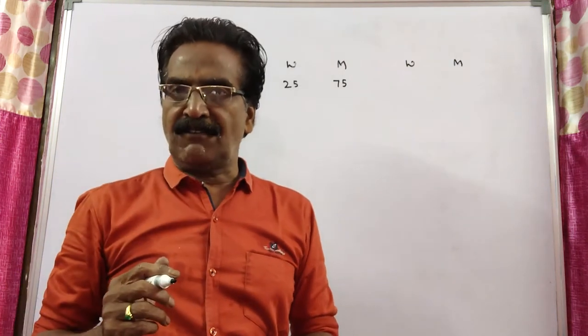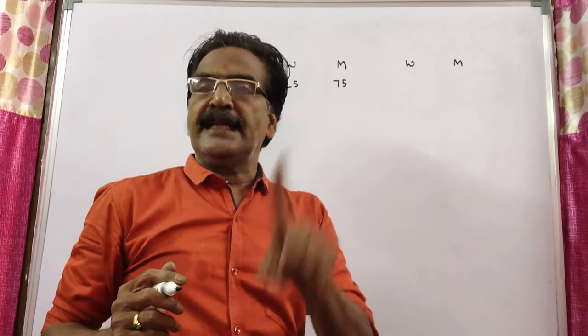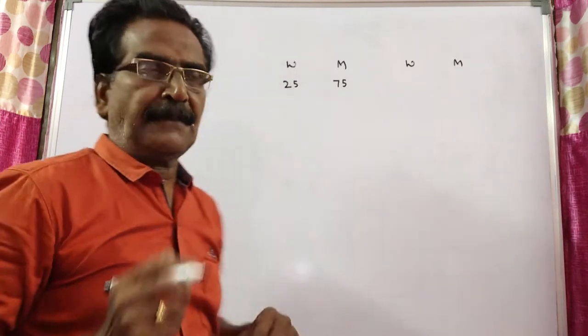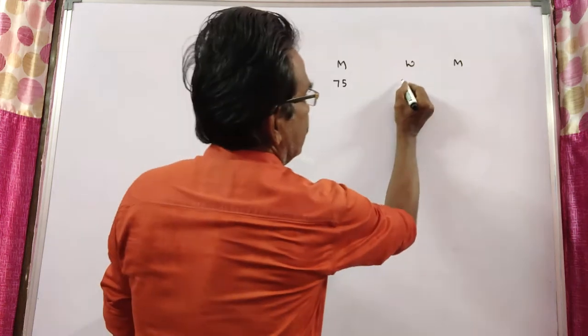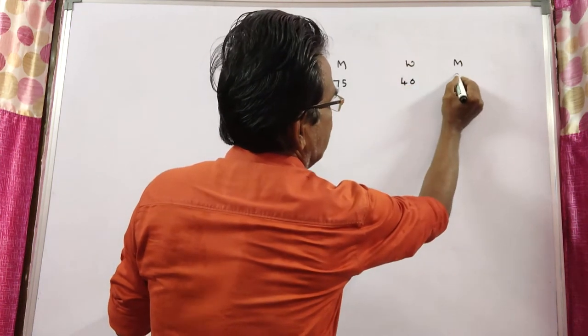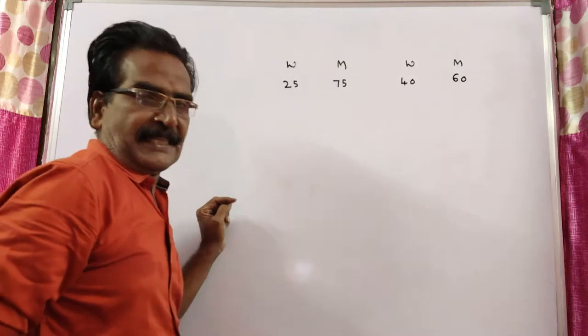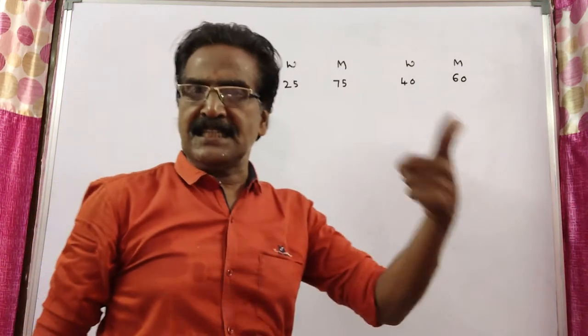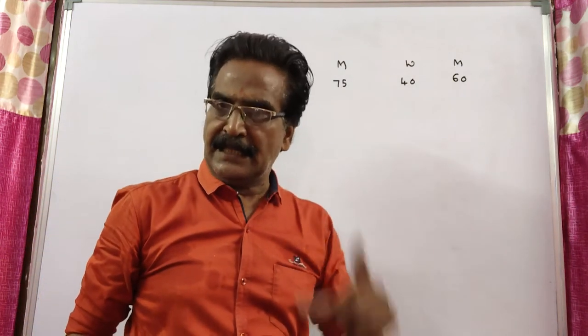After adding 40 liters of water to the mixture, the percentage of water becomes 40%. That means water 40%, milk 60%. Now the question is, what is the initial quantity of milk in the mixture?